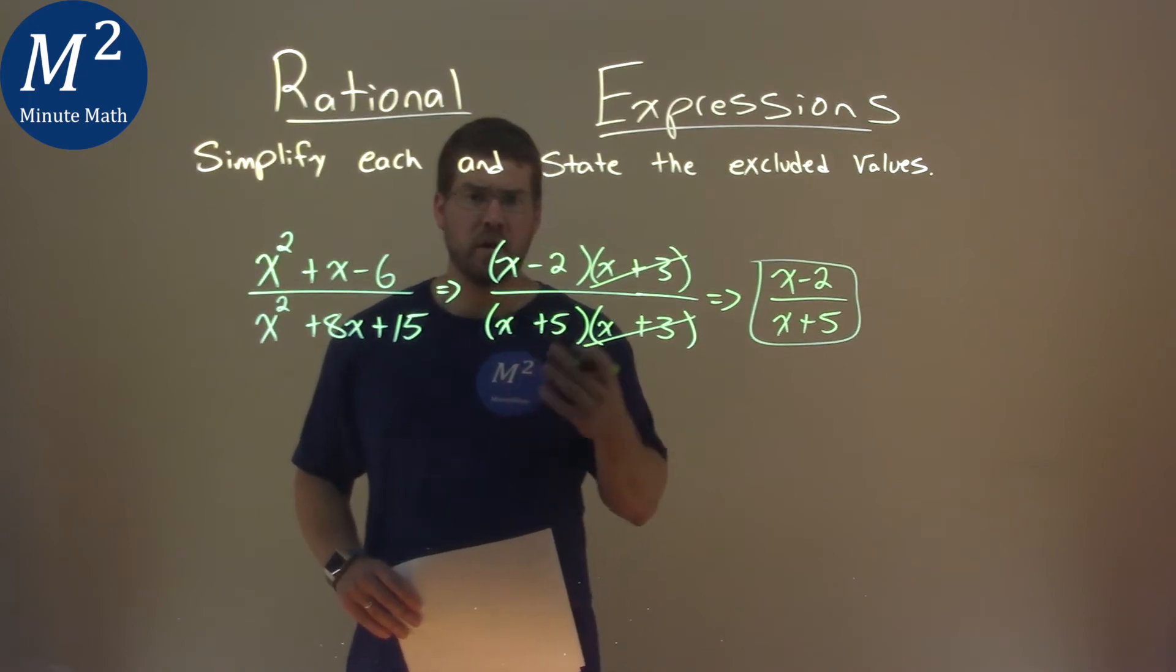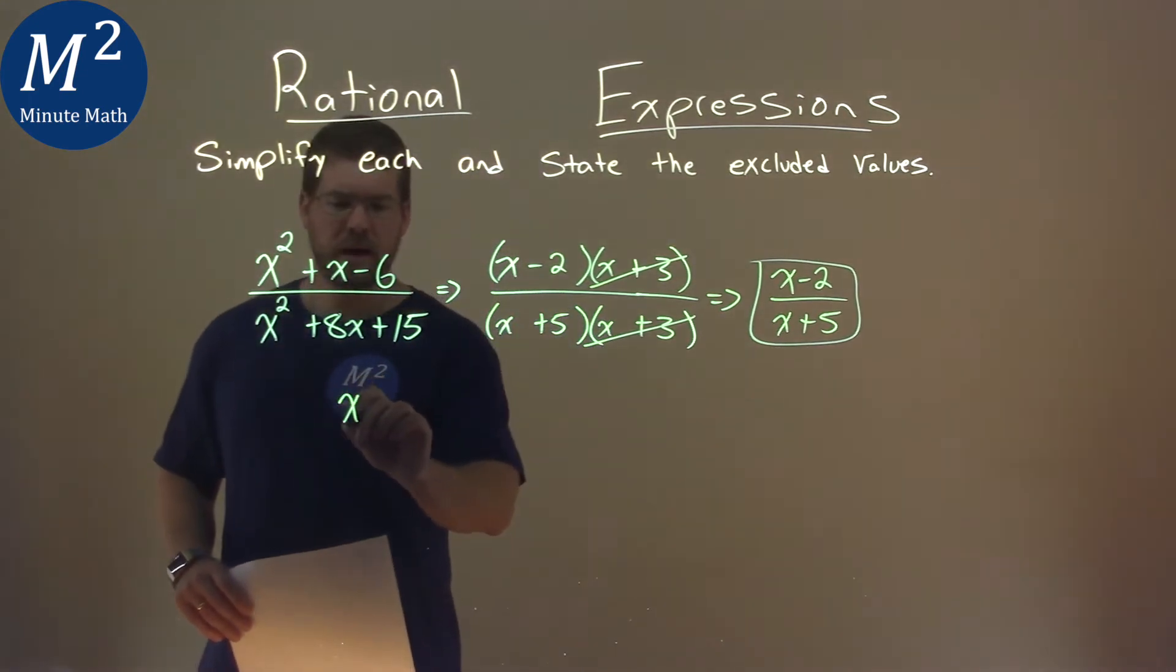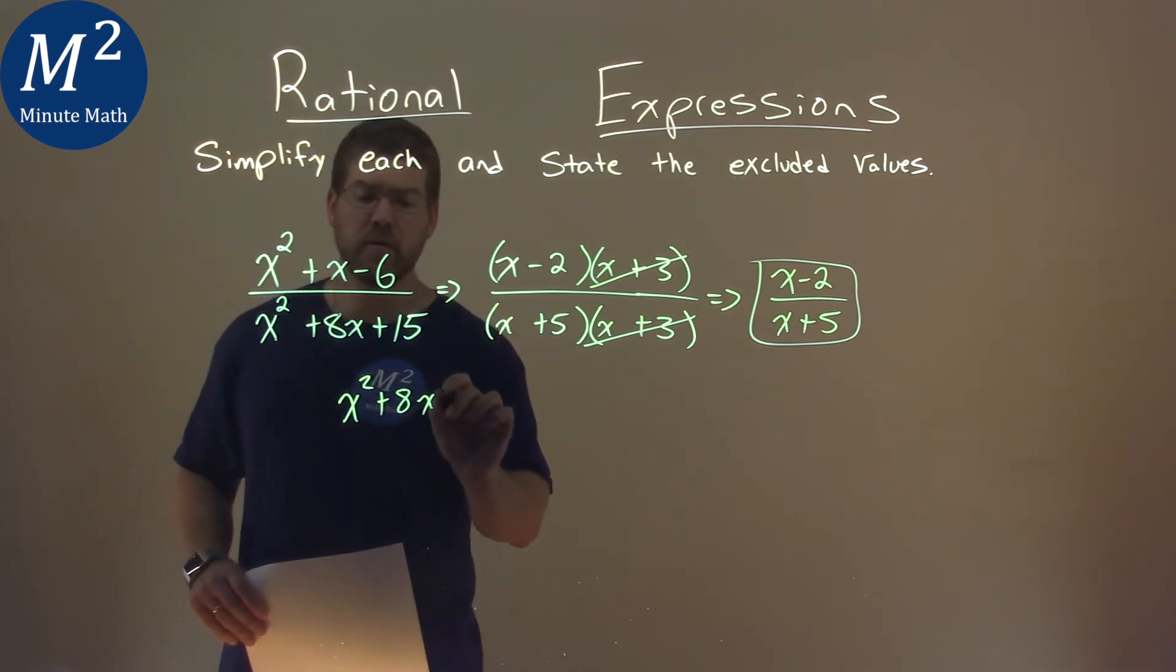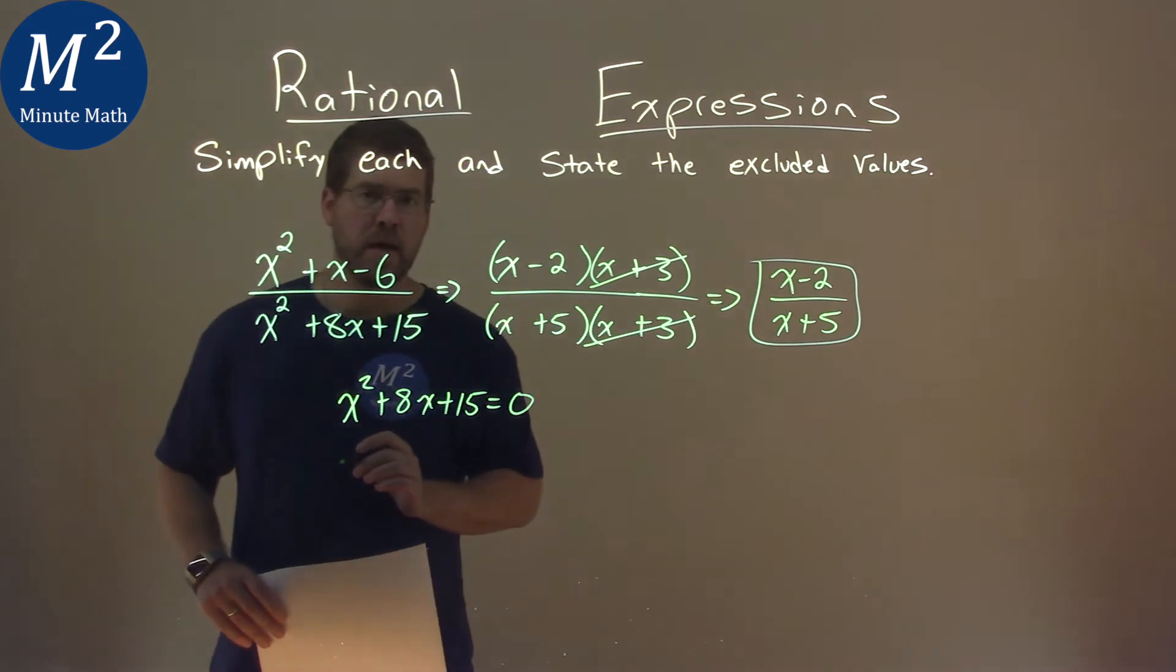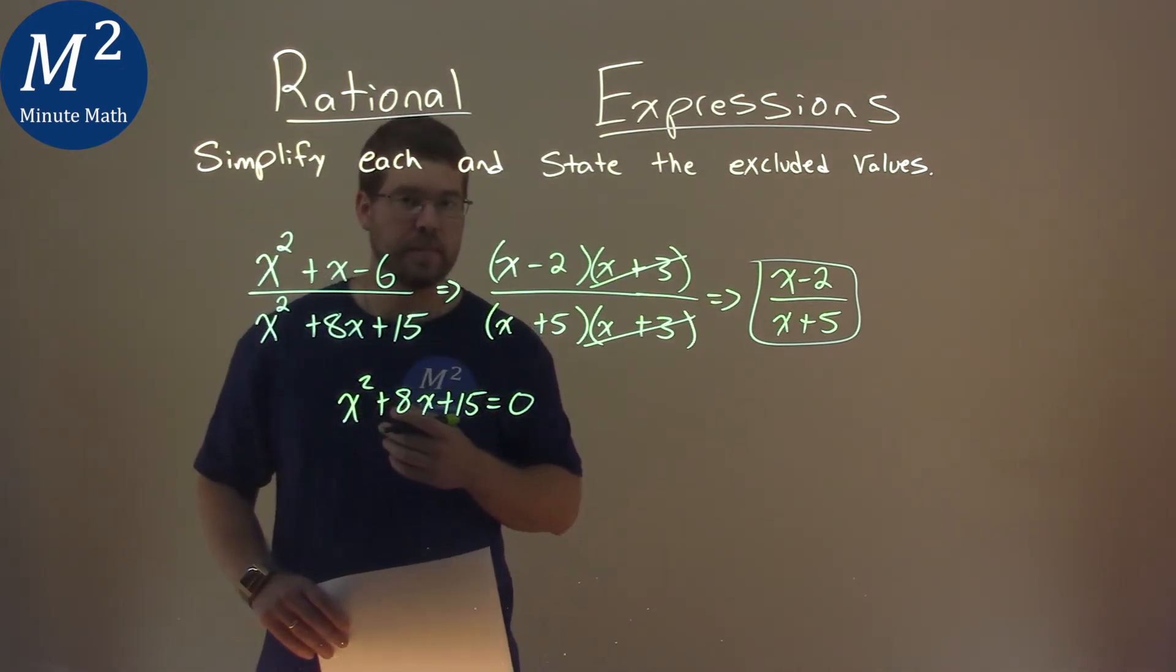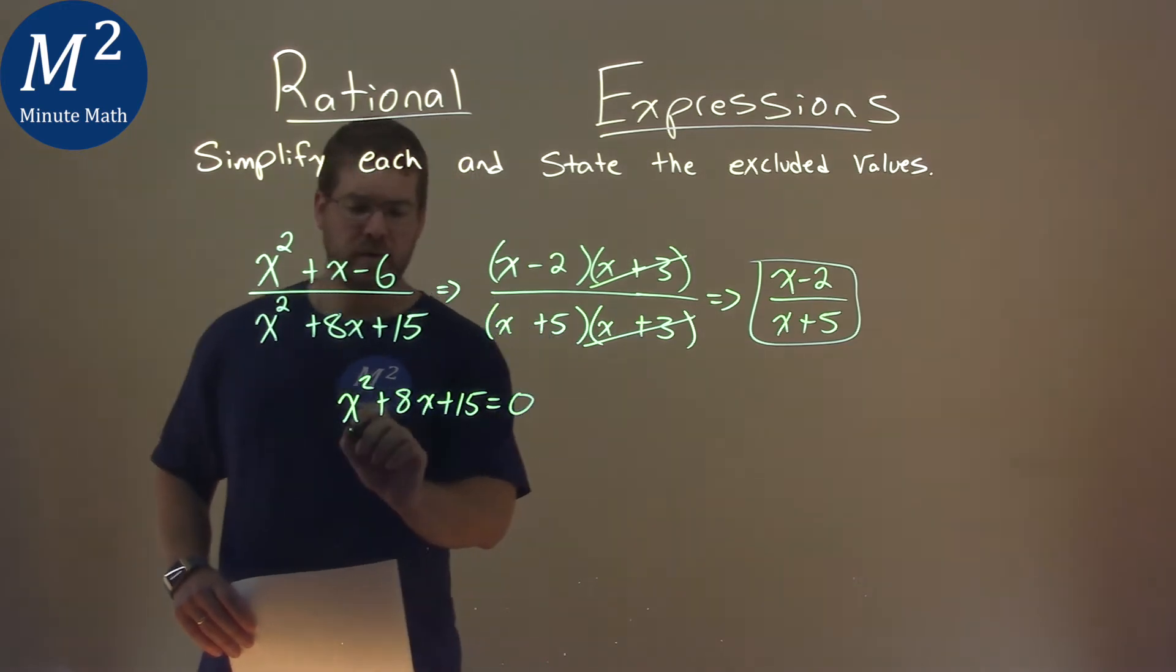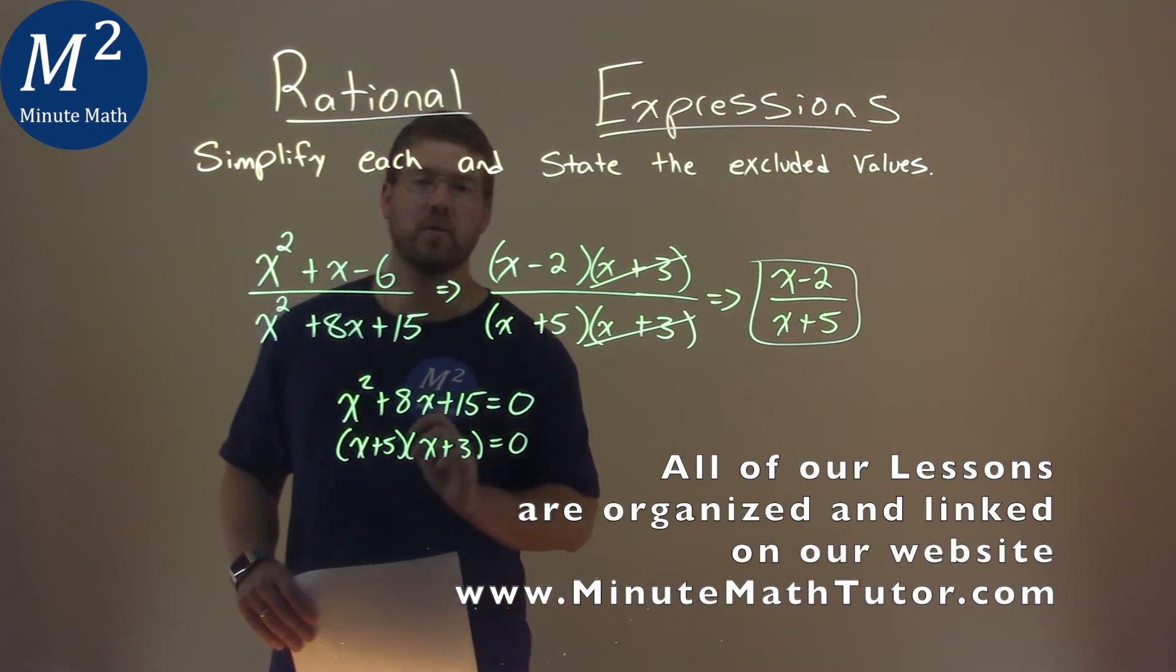But we also have to find our excluded values. So we look back at our original expression, x squared plus 8x plus 15, and we're going to set it equal to 0. And now we're going to solve for our x value when our denominator is equal to 0. Well, luckily we already factored this. That is an x plus 5 times an x plus 3. No need to make extra work.